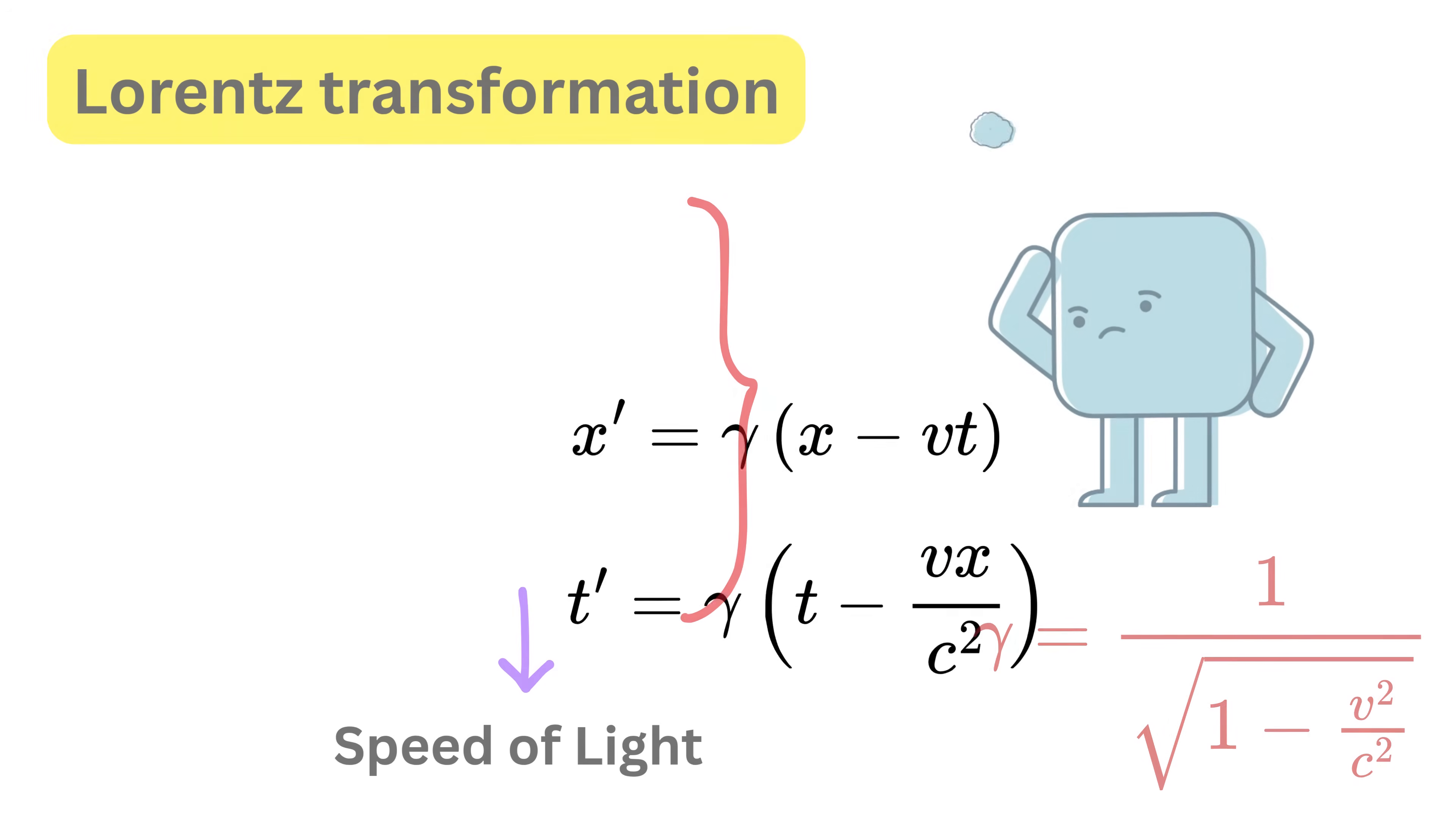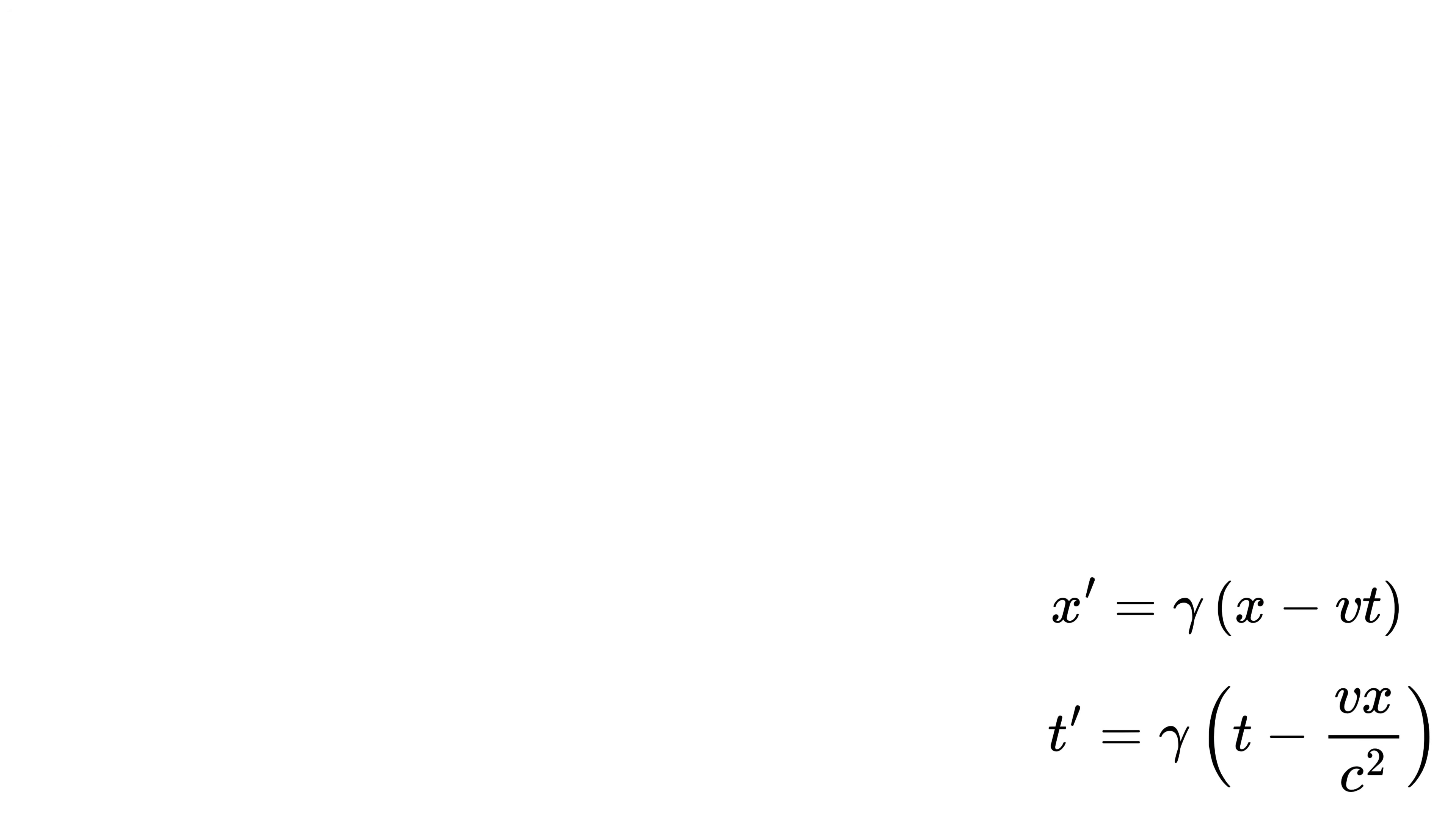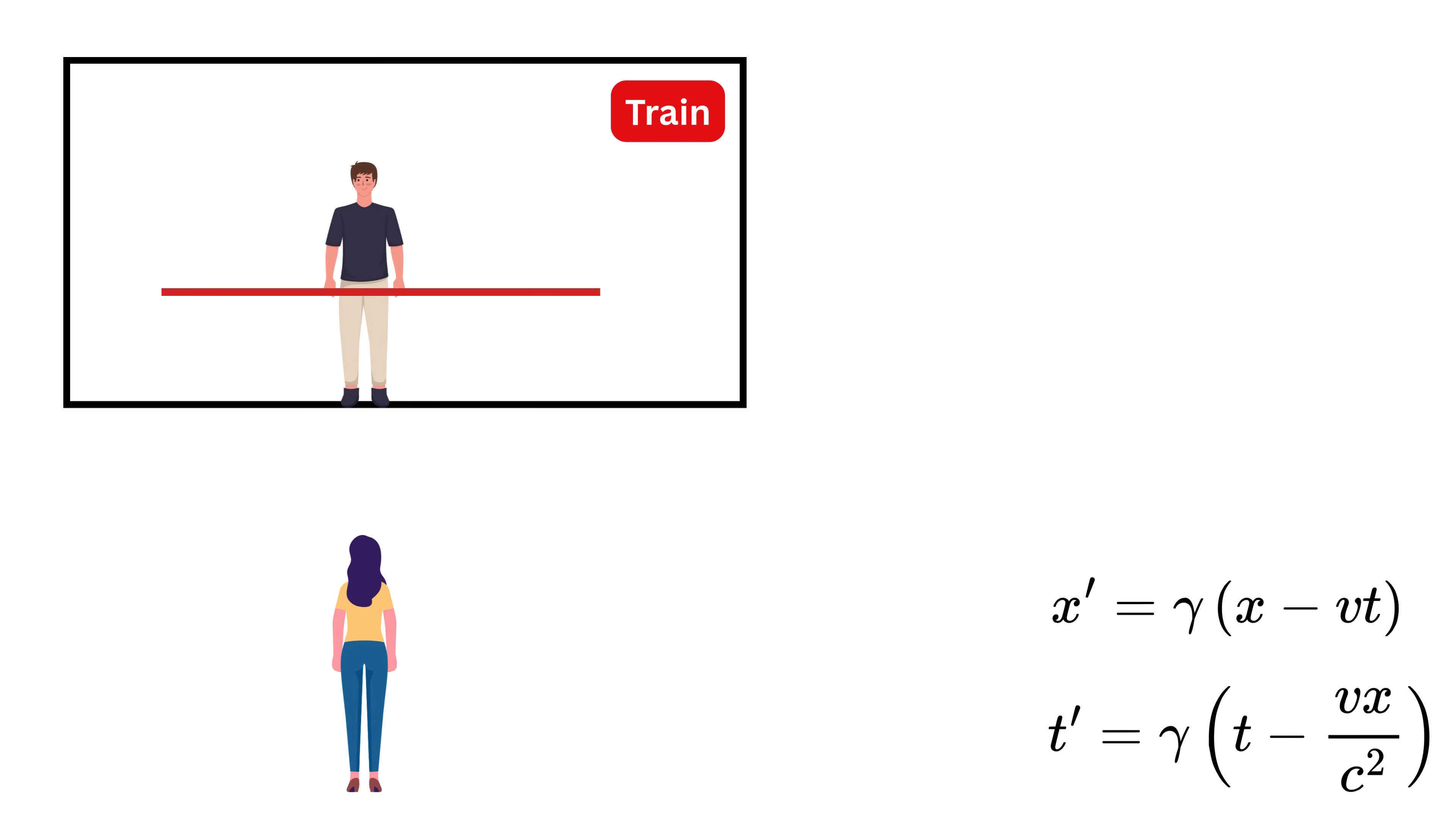Consider this scenario. Bob is standing inside a train holding a long pole. From Bob's point of view, he is at rest with respect to the train and so he says my pole is just one meter long, nothing special.